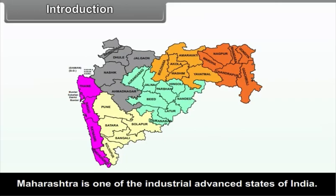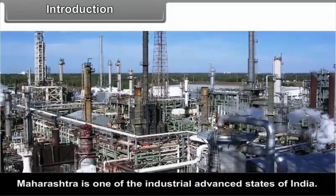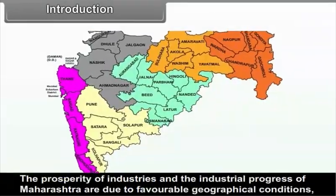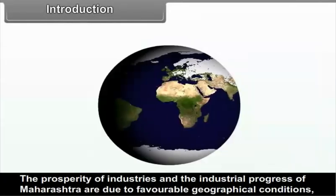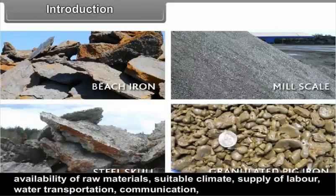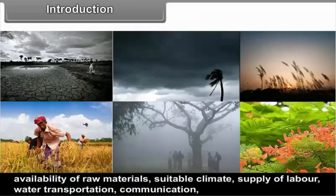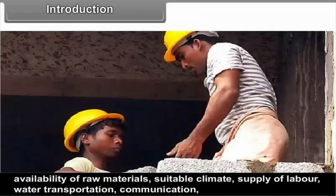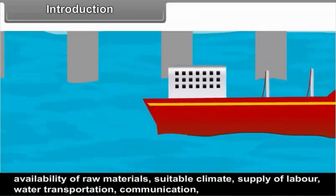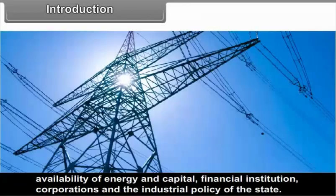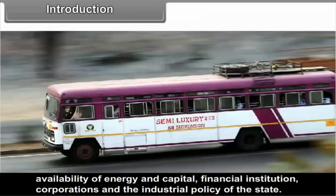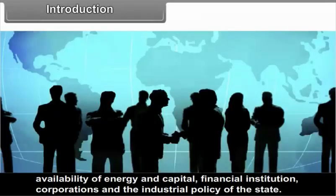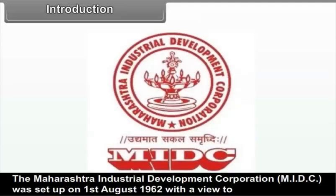Maharashtra is one of the industrially advanced states of India. The prosperity and industrial progress of Maharashtra are due to favourable geographical conditions, availability of raw materials, suitable climate, supply of labour, water, transportation, communication, availability of energy and capital, financial institutions, corporations and the industrial policy of the state.